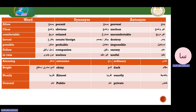Now let's look at synonyms and antonyms. Allow means permit — antonym: prevent. Clear means obvious — antonym: unclear. Comfortable means relaxed — antonym: uncomfortable. Invent means create or design — antonym: destroy. Possible means probable — antonym: impossible. Fellow means companion — antonym: enemy. In vain means useless — antonym: useful. Amazing means awesome — antonym: ordinary or normal. Bright means shiny — antonym: dark. Nearly means almost — antonym: exactly. General means public — antonym: private.